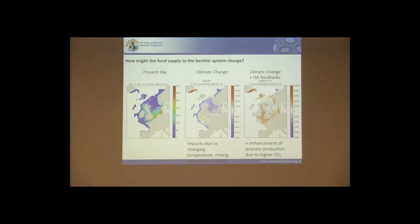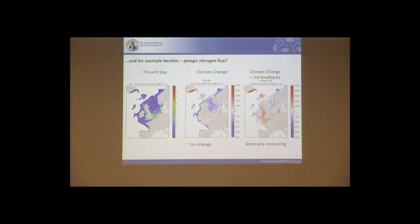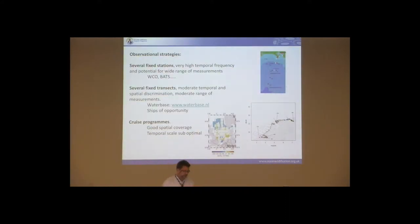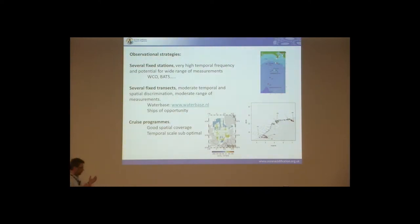The second factor is organic matter supply to the benthic system: present day, a future scenario without OA feedbacks, and a future scenario with some OA impacts. This shows a spatially distinct set of occurrences — you probably need information from the Irish Sea as well as the southern North Sea, and from the Channel as well as the northern North Sea. The third factor is nutrient flux back out of the benthic system, which is very important in shelf seas, showing similarly complex spatial patterns. In some cases the mean may not change much, but where it's happening can change considerably.